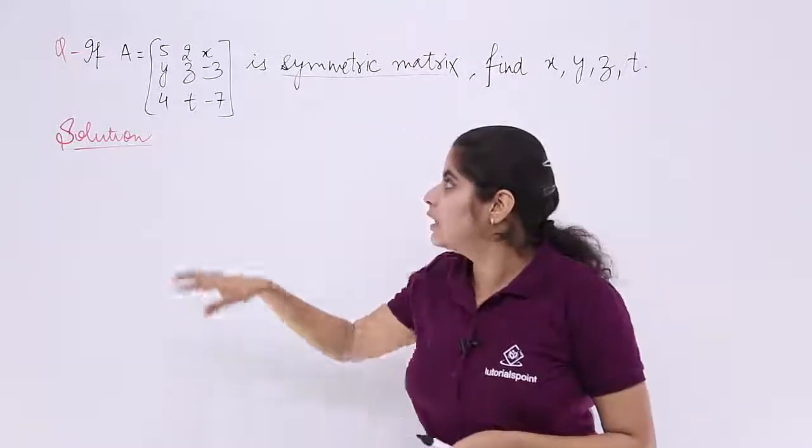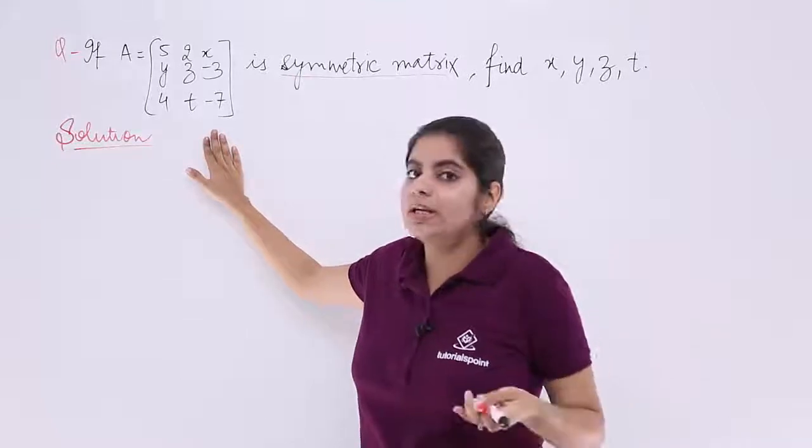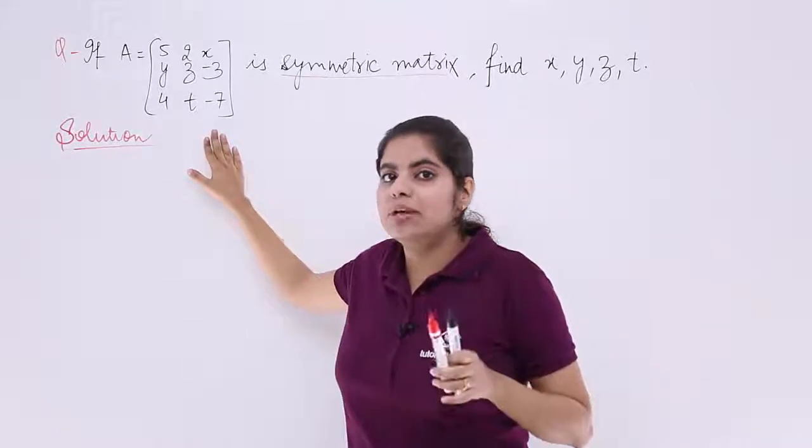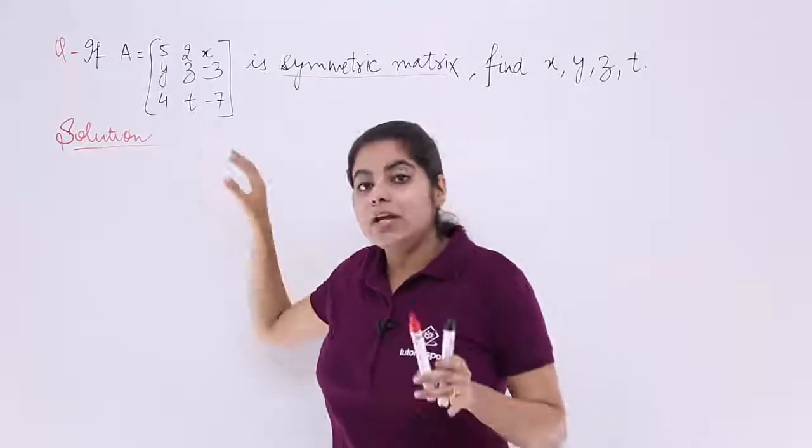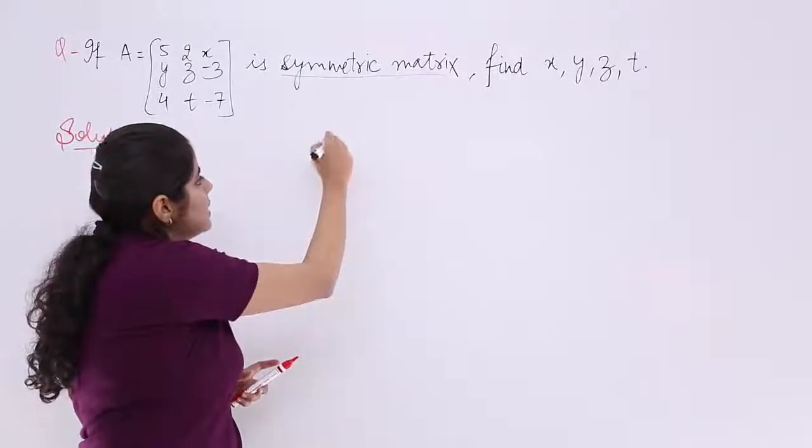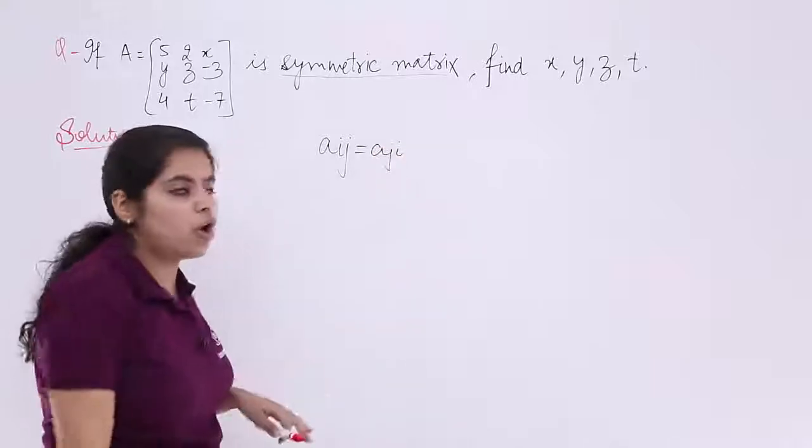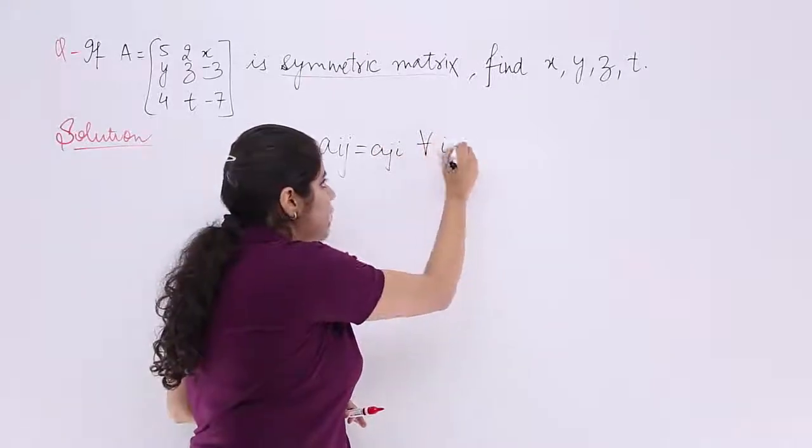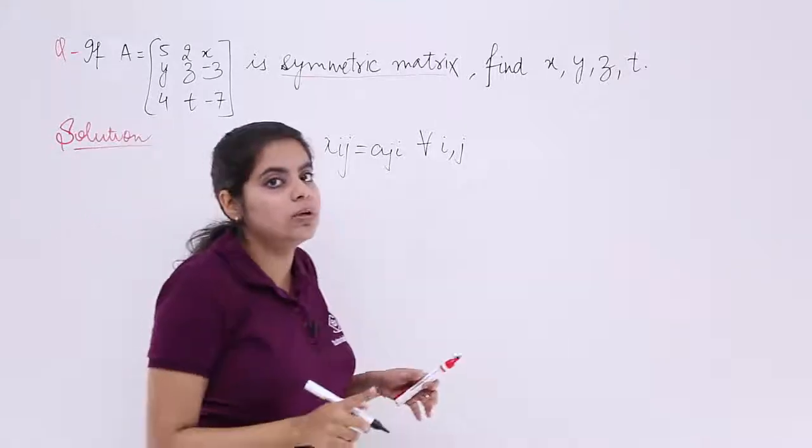Now, if the given matrix is given to me as symmetric matrix, what can I infer? I can infer that A transpose is equal to A and if A transpose is equal to A, I can already infer that A_ij will be equal to A_ji for all i,j. Why? Because it is given to me that the matrix is symmetric.